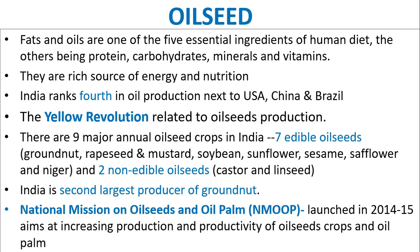And two non-edible oil seeds: castor and linseed. India is the second largest producer of groundnut. The National Mission on Oil Seeds and Oil Palm, known as NMOOP, was launched in 2014-15, and aims at increasing production and productivity of oil seeds, crops and oil palm.